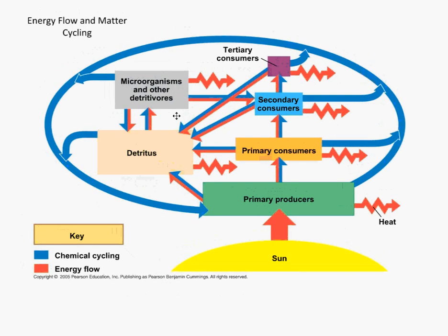As far as energy cycling through ecosystems, this should be familiar to you — the idea of trophic levels. 'Trophic' is just a word that means feeding, so these are just feeding levels. You have the sun, which feeds all energy into the system. Then you have the primary producers, like plants, that are literally producing the food, and then a series of consumers. What happens to that energy as you go up the ladder?